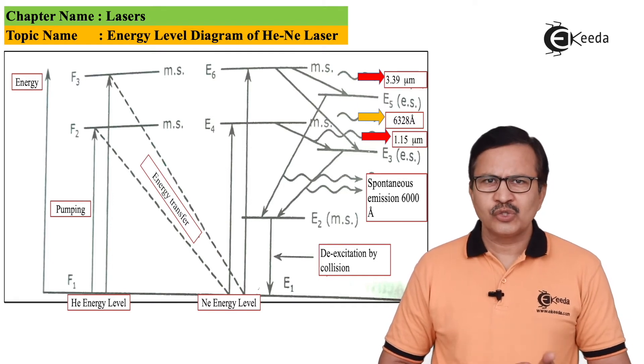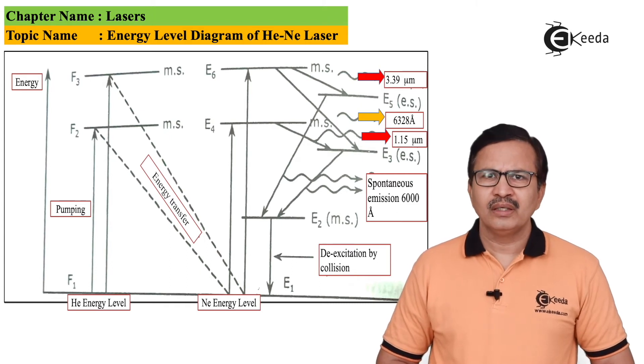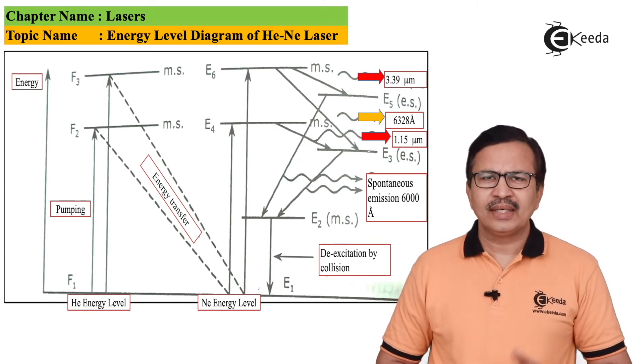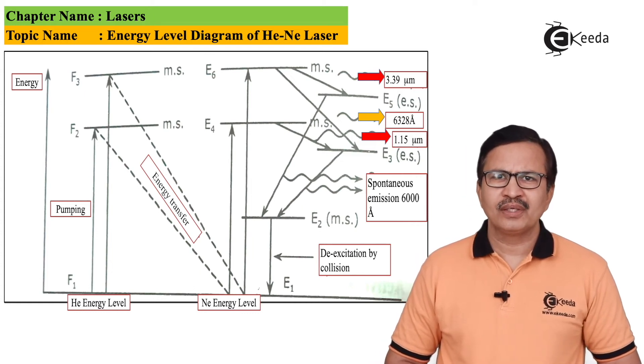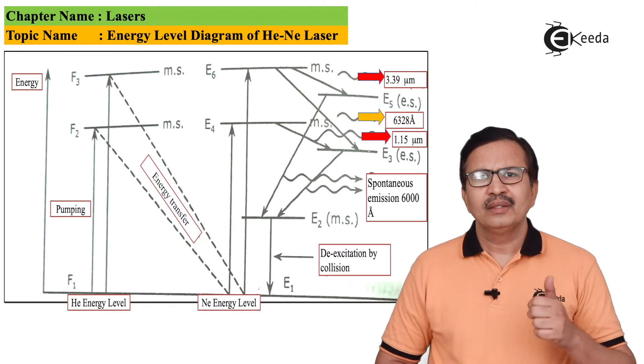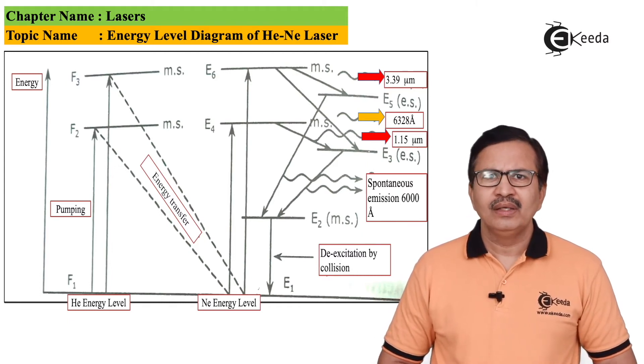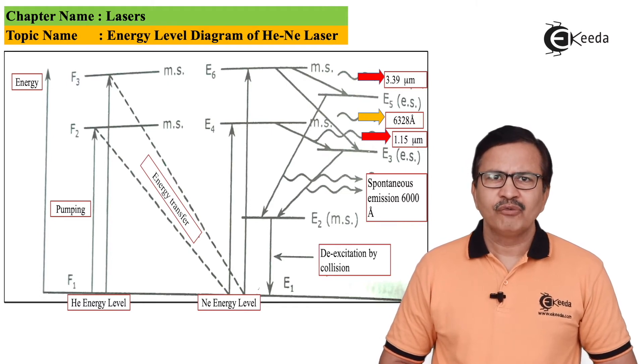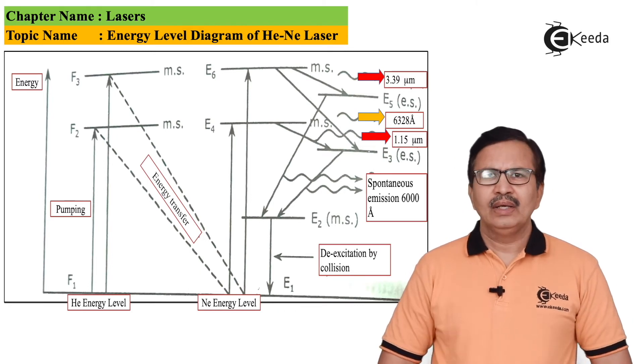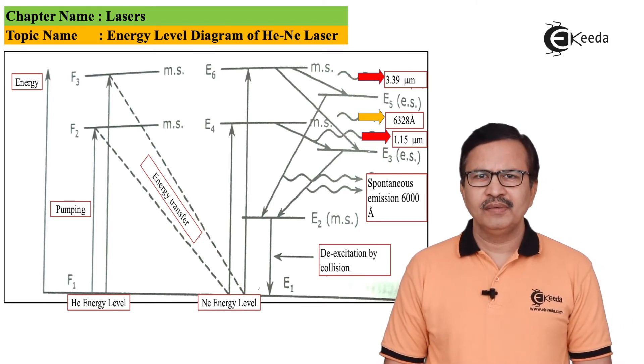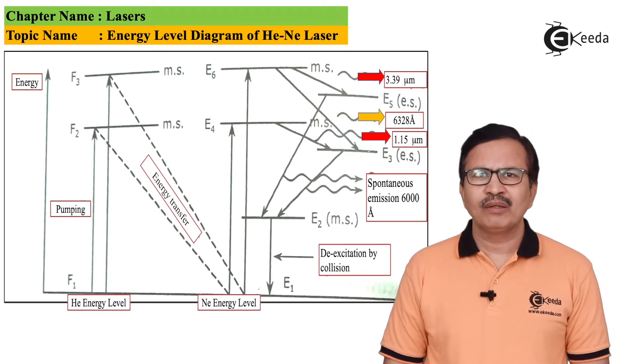E4 also is a metastable state and atoms in E4 undergo stimulated emission. They emit radiation by making a fall from E4 to energy level E3, and this particular transition gives rise to an IR photon of wavelength 1.15 microns.